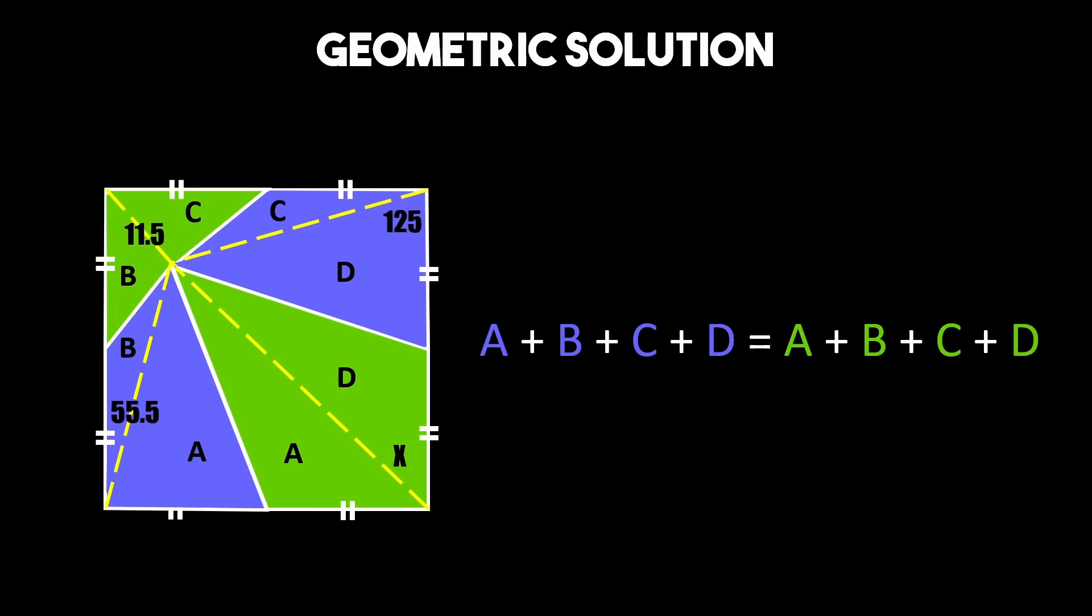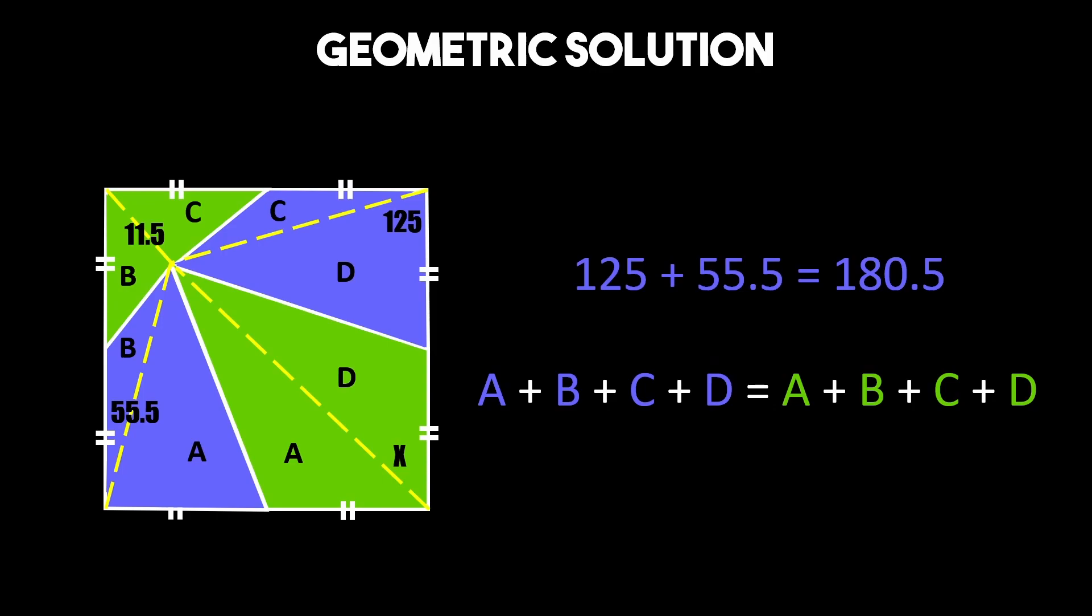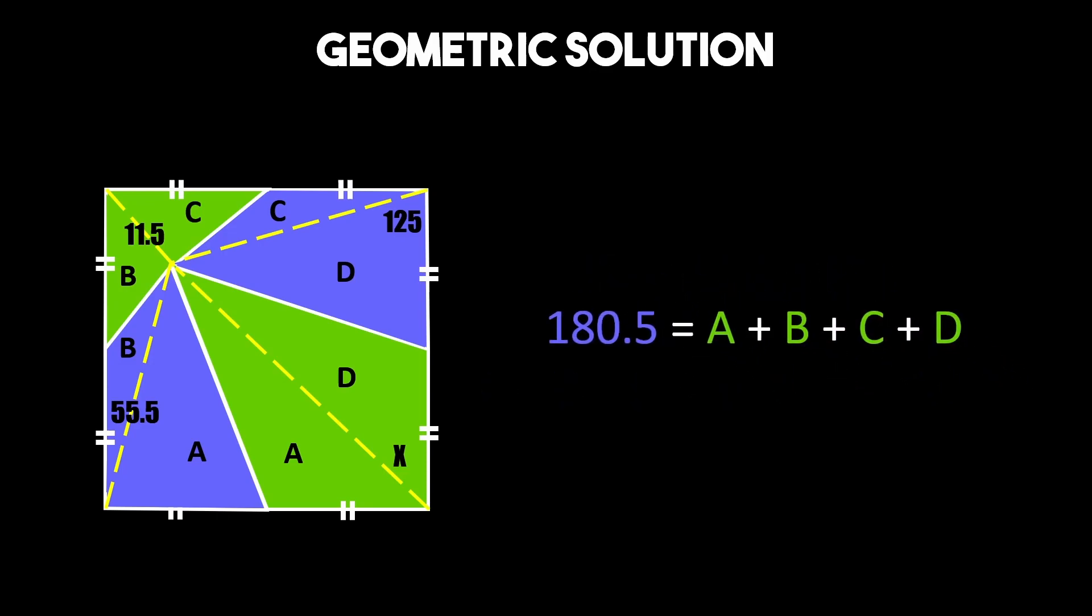Adding up the bottom left and top right triangles we see that the area of our first set of a, b, c, d triangles equals 180.5 which means the left side of our equality becomes this. Then we take this area of 11.5 and substitute our second c and b areas with it. And since the remaining a plus d area equals x this gives us the final equality that lets us solve for our missing area. Which we know from the algebraic method equals 169.